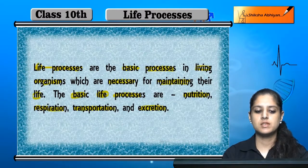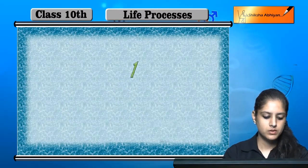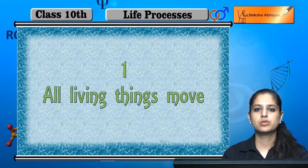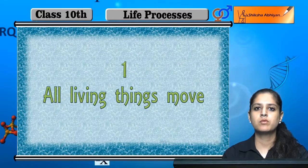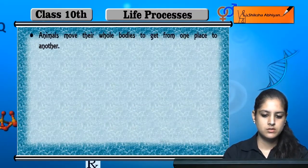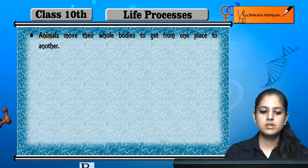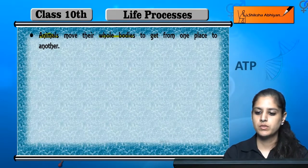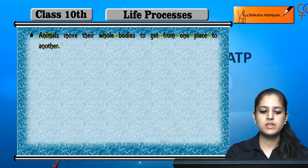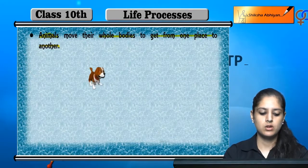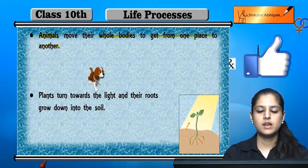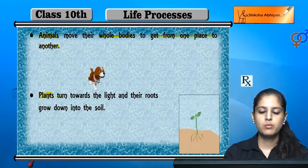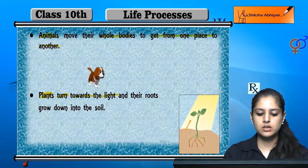Now we will discuss the life processes one by one. The first life process is that all living things move. Animals move their whole body to get from one place to another — for example, a dog moves its complete body.